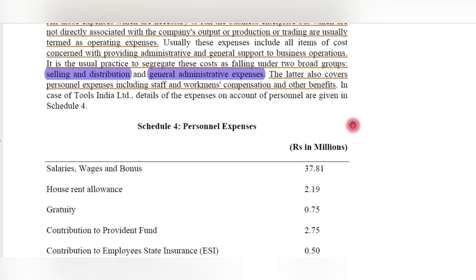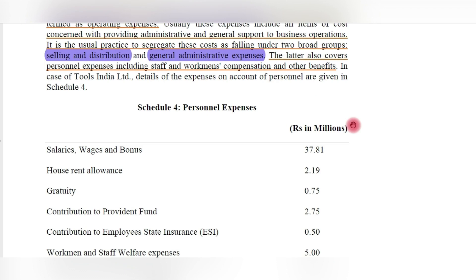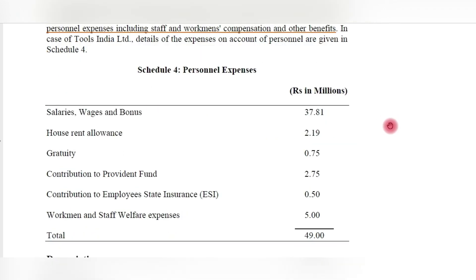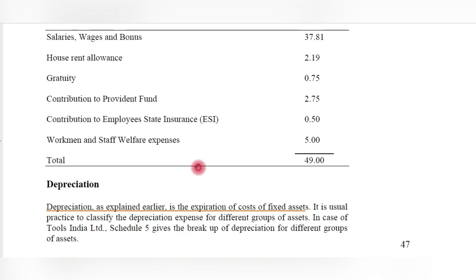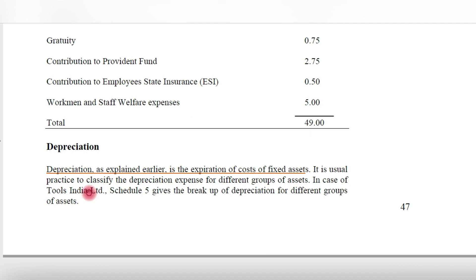General administrative expenses cover personal expenses and staff-related expenses like workman's compensation, other benefits like PF, gratuity, insurance, and other costs. In the example, personal expenses amount to 49 rupees. The schedule for personal expenses includes: salaries, wages and bonuses 37.81 rupees; house rent allowance 2.19 rupees; gratuity; contribution to provident fund; contribution to employee state insurance; and workman and staff welfare expenses of 5 rupees. These are personal-related administrative expenses.